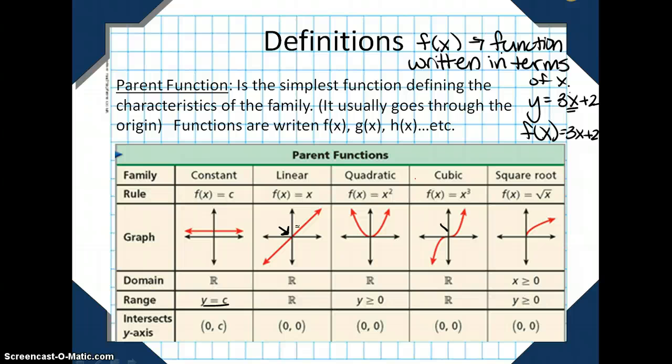Quadratics are x squared, and they make that u, and it goes through the origin. Cubics make an s, and it also goes through the origin. And square roots have a starting point at the origin. All of these can move around and translate.